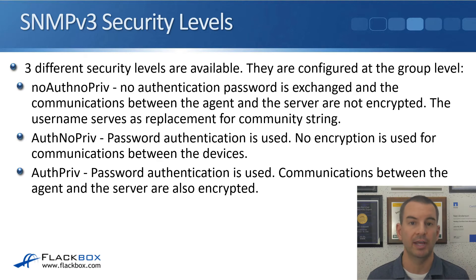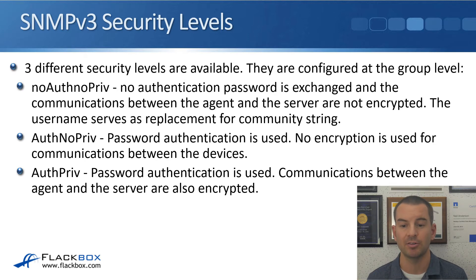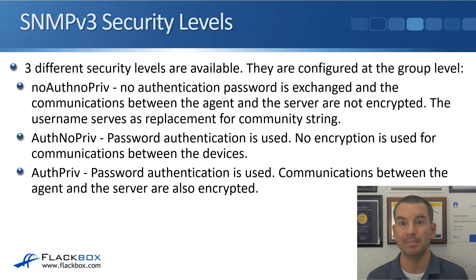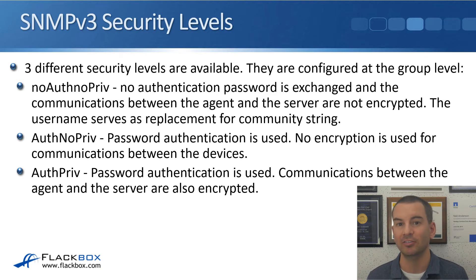The first security level is noauth, nopriv — meaning no authentication and no privacy. No authentication password is exchanged, and communications between the agent and the server are not encrypted. It still uses a username rather than a community string, but that username basically replaces the community string from SNMP v1 and v2. So there's not much advantage over the older SNMP versions.